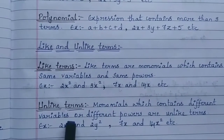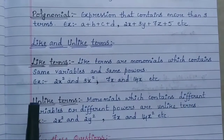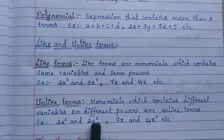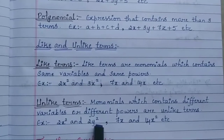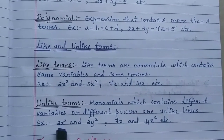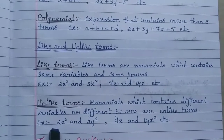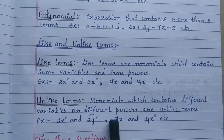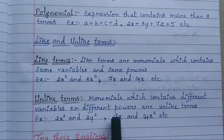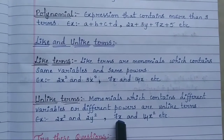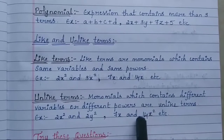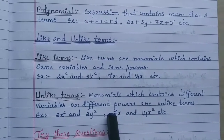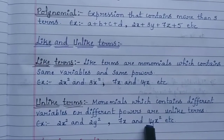Unlike terms are monomials which contain different variables or different powers. For example, x² and y² have different variables, so they are unlike terms — you cannot add or subtract them. Similarly, 7x (power 1) and 14x² (power 2) are unlike terms because their powers do not match, so you cannot add or subtract them.